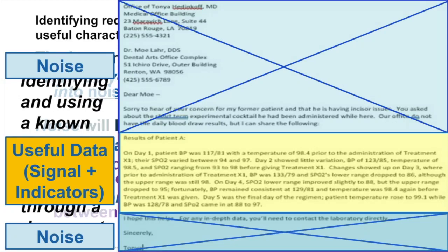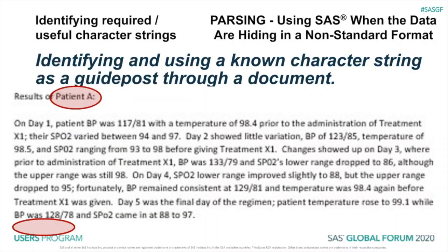The part that I have highlighted in yellow is useful data. This is where the data exists, and this is where the indicators exist. Let's take a look at what we are going to do to find, identify, keep, and reject. If we look at the signal part of the data, the useful data, we will see that we begin with the string 'Patient A' and we end with a blank line. So we are going to write a routine that reads every line. It rejects the lines until we get to Patient A, and then it keeps them until we get to the blank line. Very simple routine.